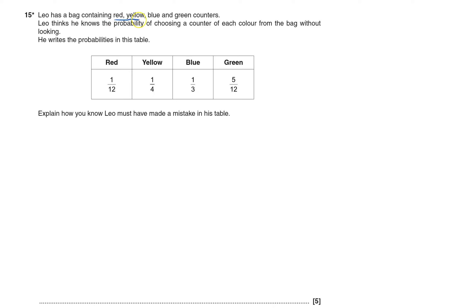There's a bag containing red, yellow, blue and green counters. He thinks he knows the probability of choosing a counter of each colour from the bag without looking and he's got these probabilities. Explain how you know Leo must have made a mistake in his table.